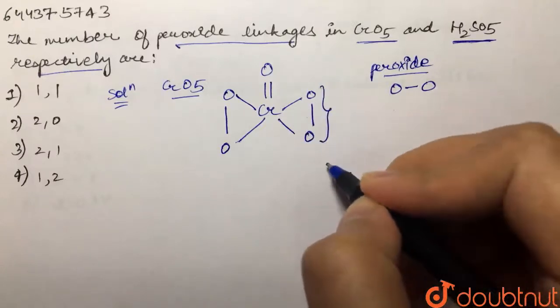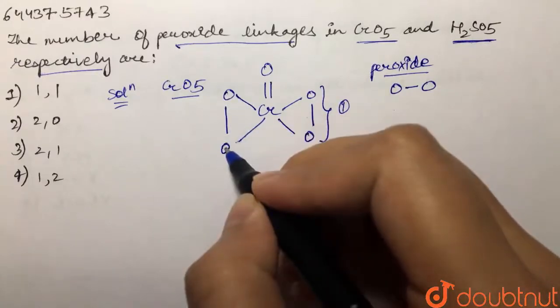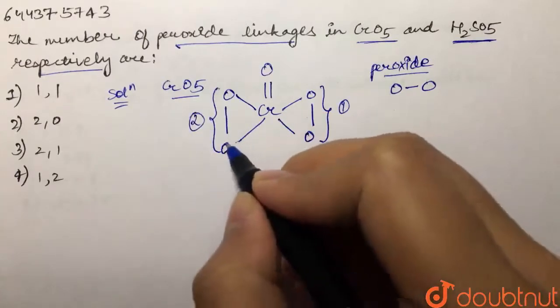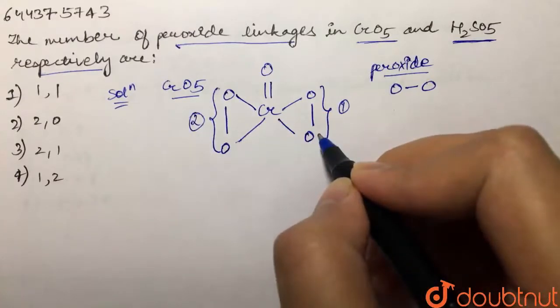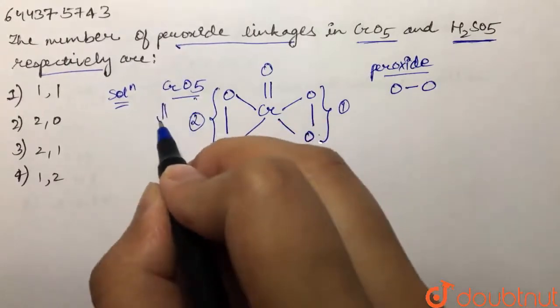So that means this is one peroxide linkage and this is also a similar case. We have oxygen single bond oxygen, so this is also a peroxide linkage. This is our second peroxide linkage. So we have a total of two peroxide linkages in CrO5.